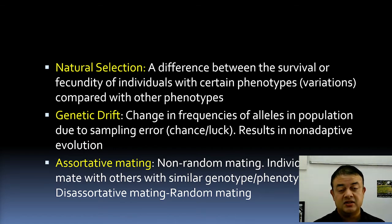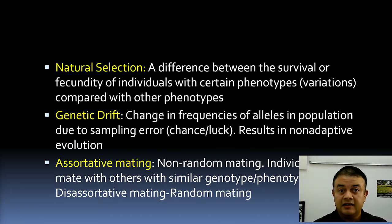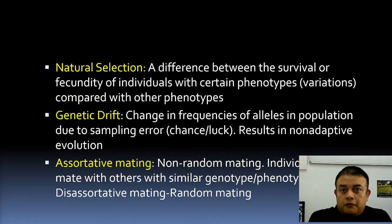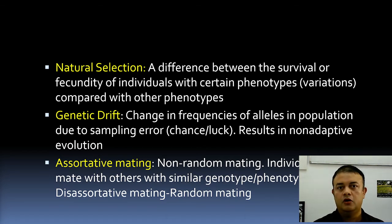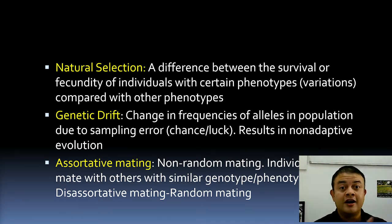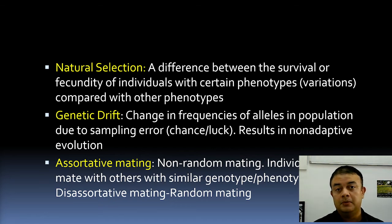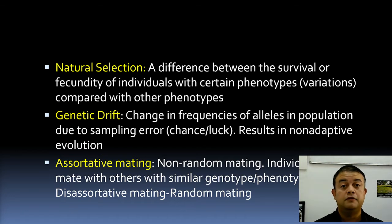Deleterious recessive alleles can increase in frequency through drift — that is a big problem. But drift has both positive and negative aspects. In drift, the variation is random and the survival of variants is also random. That is the main difference between drift and selection: in selection, variation is random but the survival of certain variants is non-random. Motoo Kimura's neutral theory holds that drift is the most important mechanism of evolution at the level of DNA sequences.